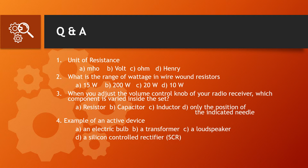Next, question number 4: Give an example of an active device. Option A is an electric bulb, Option B is a transformer, Option C is a loudspeaker, Option D is a silicon control rectifier. The electric bulb is a passive device, a transformer is a passive device, and a loudspeaker is also a passive device. The correct answer is Option D, silicon control rectifier.